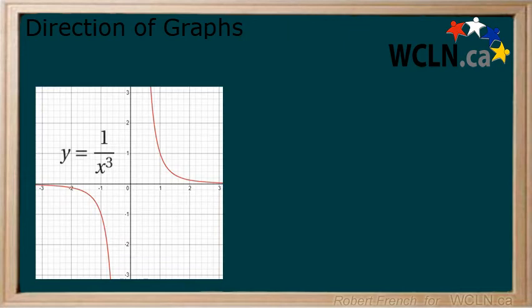When the largest power in the denominator is odd, the graph will move downwards as we approach from the left. As we approach from the right, the graph will move up. This is because as we input negative x values in an odd power, the returns are negative, and therefore the graph trends down. When we input positive x values, an odd power returns positive x values.